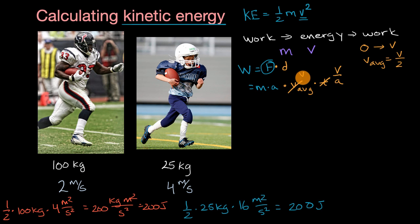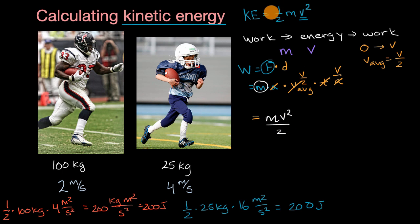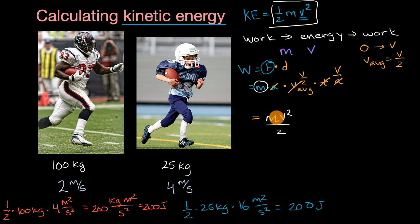So the average velocity is V over 2 — and now we get a little drum roll. We see that acceleration cancels with acceleration, and we are left with mass times V squared over 2, or MV² / 2, which is exactly the kinetic energy formula. So the work necessary to accelerate an object of mass M from zero to speed V is exactly ½mv², and that's how much energy is stored in that object by virtue of its motion. Without energy loss, it could in theory do that much work.